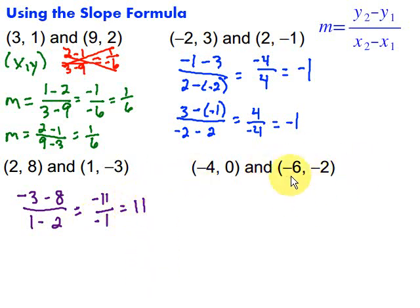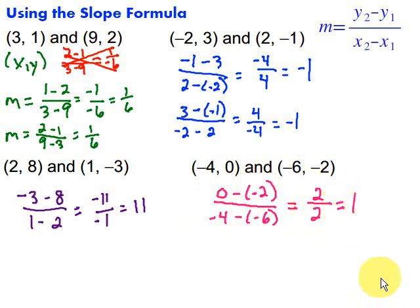And let's take a look at this last one here. And for this one, let's start with the 0. So 0 minus negative 2 over negative 4 minus negative 6. And be careful when you're subtracting the negative. Remember that becomes plus. So we have 0 plus 2, which would be 2, over negative 4 plus 6. Negative 4 plus 6 would be positive 2. And that's going to simplify to just 1.